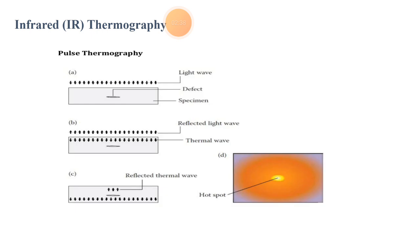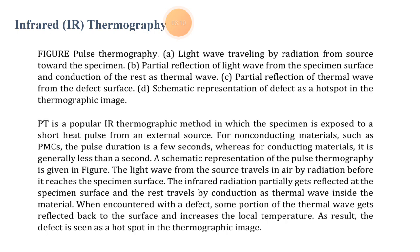This pulse thermography figure shows various structures. The first figure shows the light wave, then the effect and the specimen. The second one shows the reflected light waves and thermal waves. The third one shows the reflected thermal waves and the defects. And the last one shows how hot spots occur. So in the figure of pulse thermography: light waves travel by radiation from the source towards the specimen; the second shows partial reflection of the light wave from the specimen surface and conduction of the rest as a thermal wave; the third shows partial reflection of the thermal wave from the defect surface; and the last shows representation of defects as a hot spot in the thermographical image.